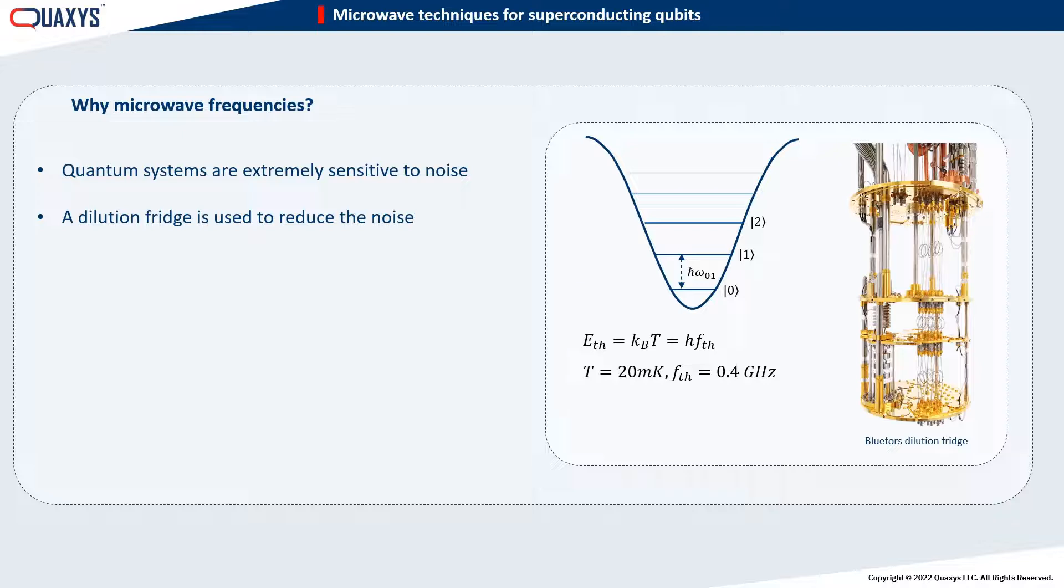In order to have control on the transition between the 0 and 1 states, the transition energy corresponding to the external field needs to be much higher than the thermal energy. Much higher could be something around 10 times higher, and this would result in a transition frequency of 4 GHz.